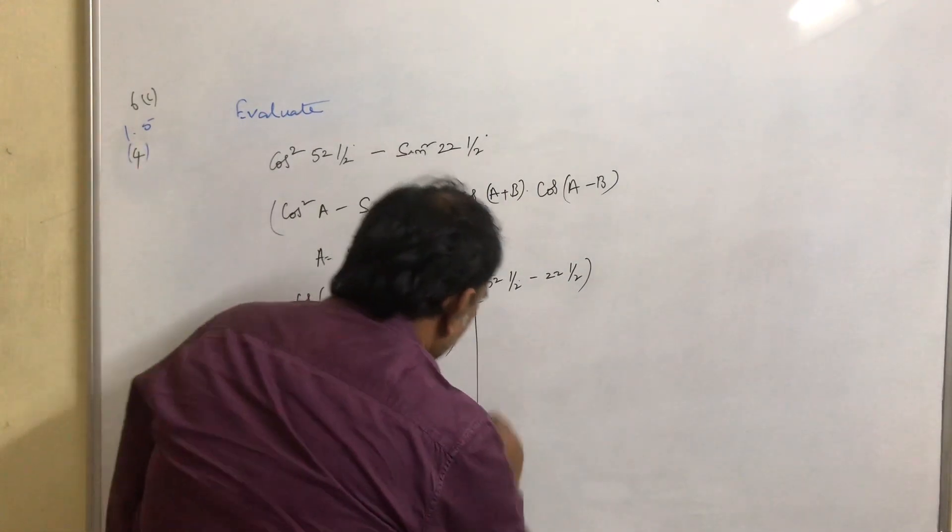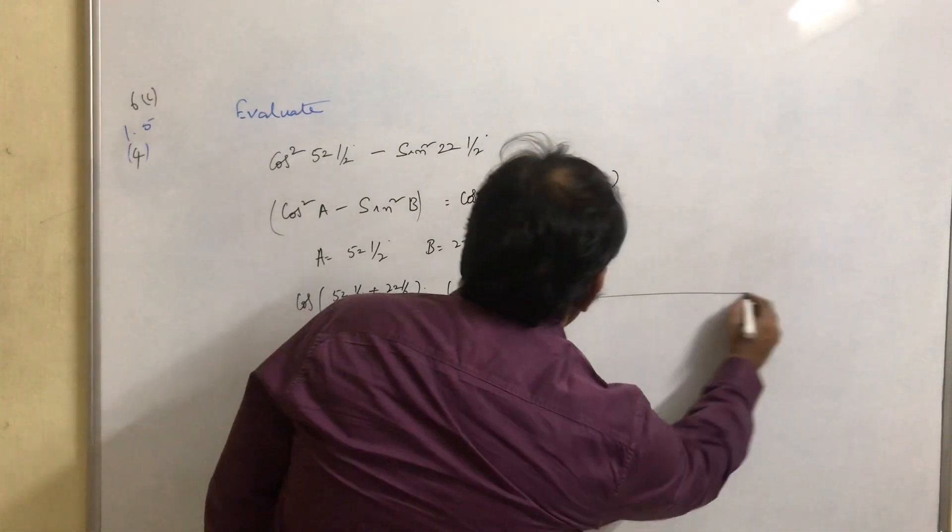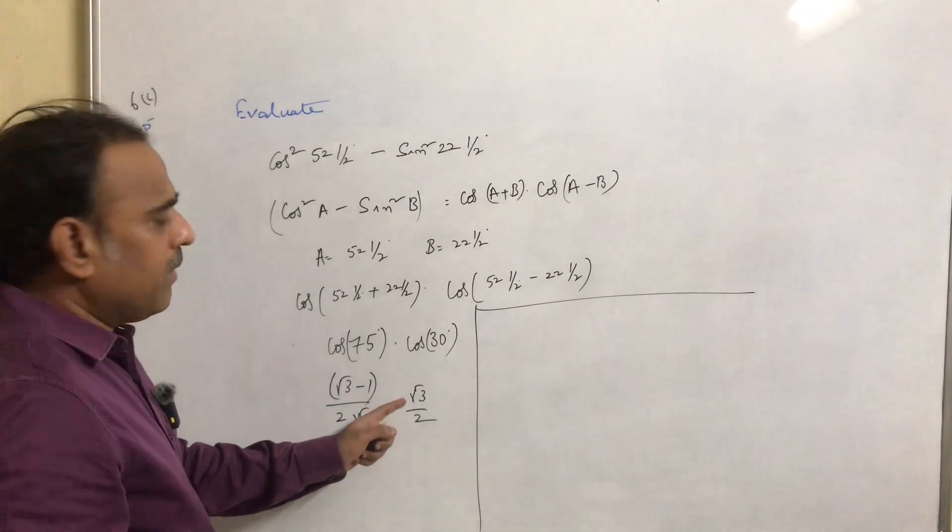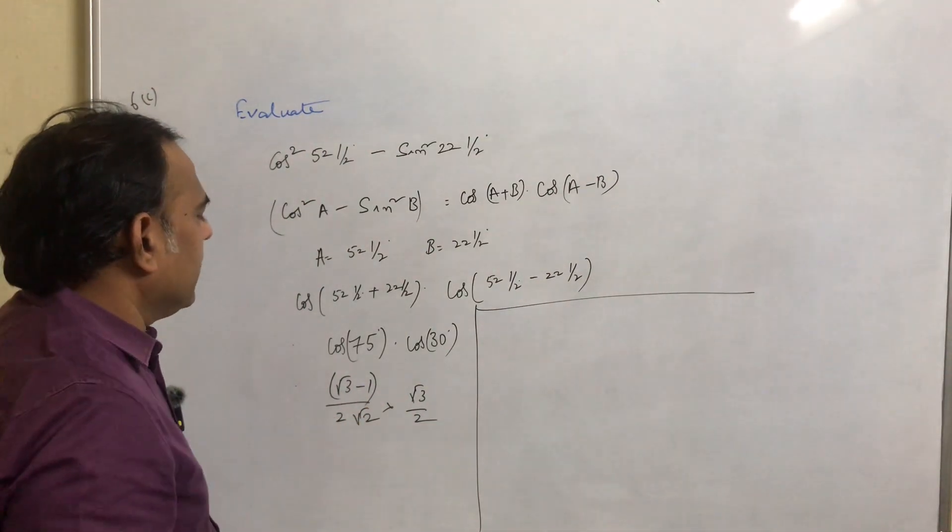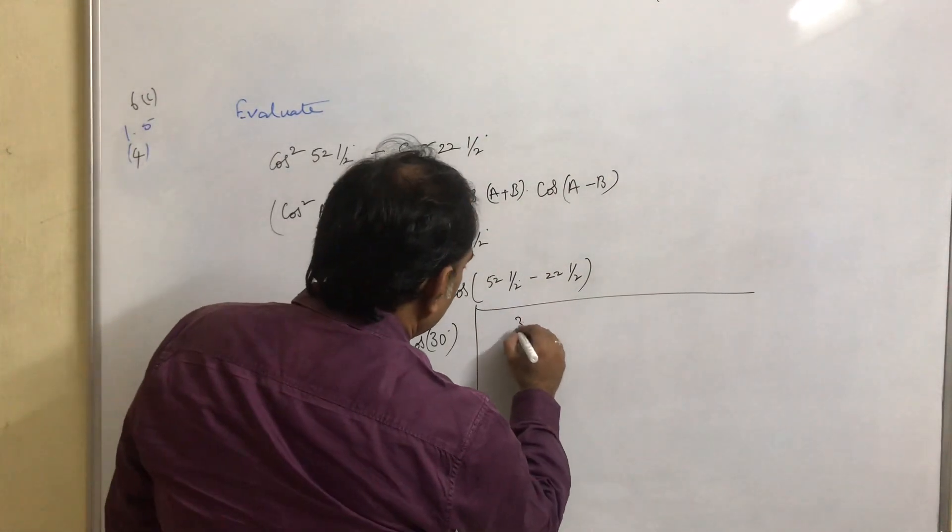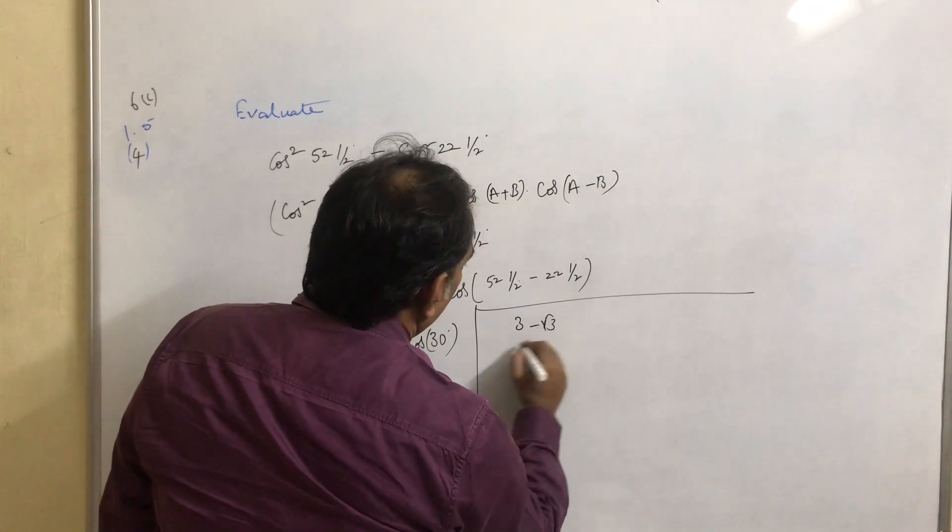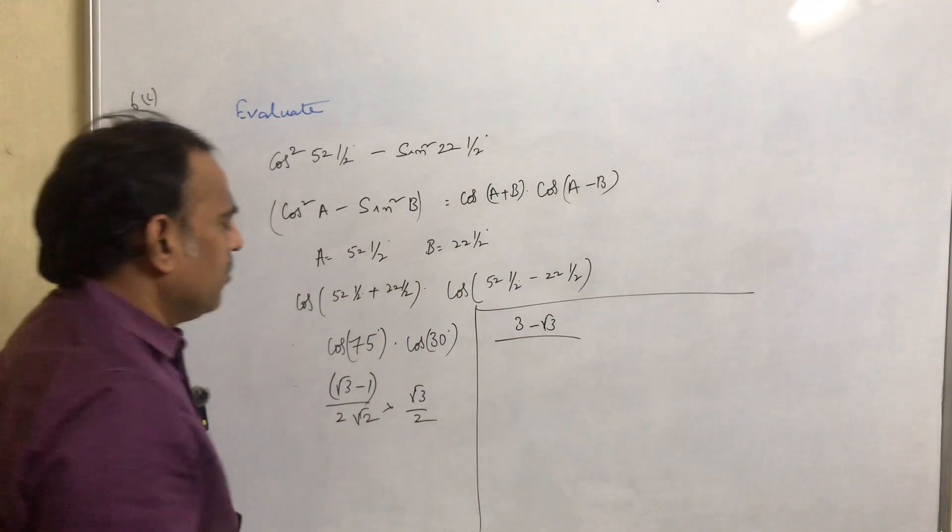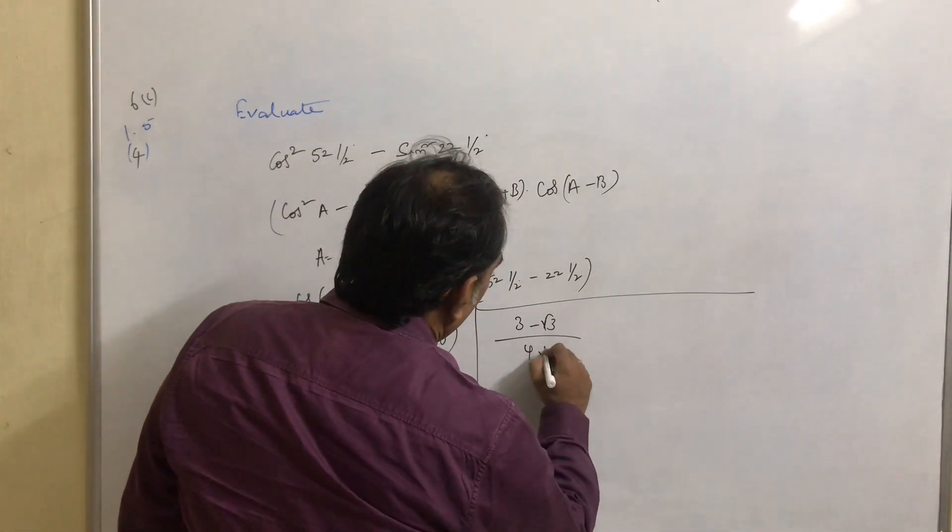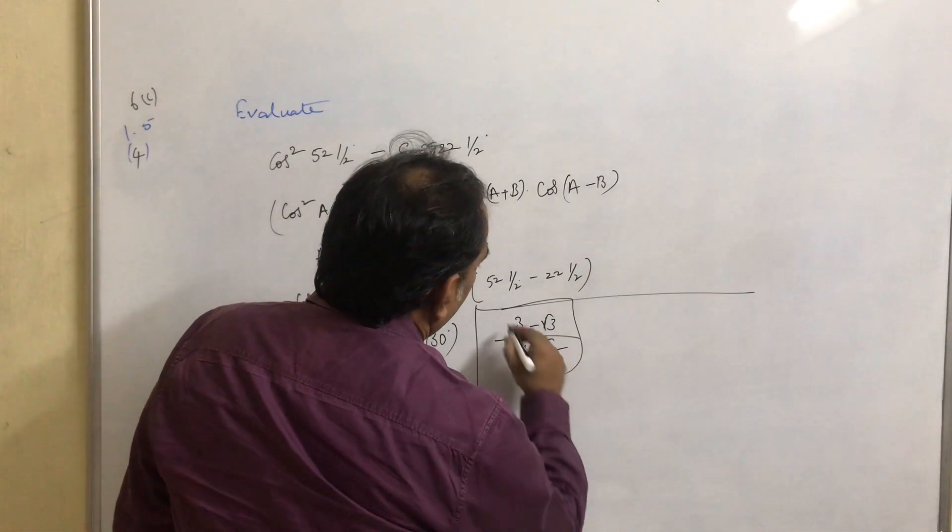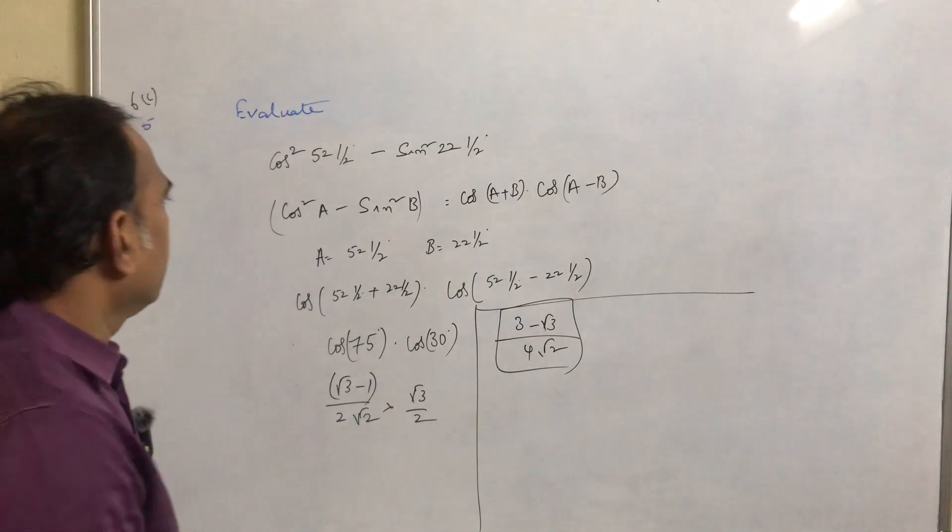This is further simplified as we just need to multiply √3 with this √3 - 1. This is (3 - √3) divided by 2√2 × 2, so that is 4√2. This is the value. Simple.